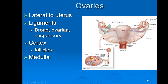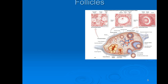Looking at the ovary, the outermost part is known as the cortex, and the innermost part is called the medulla. Going around the cortex, you have all of these round structures called follicles, and the follicles are going to contain the oocytes or the eggs.